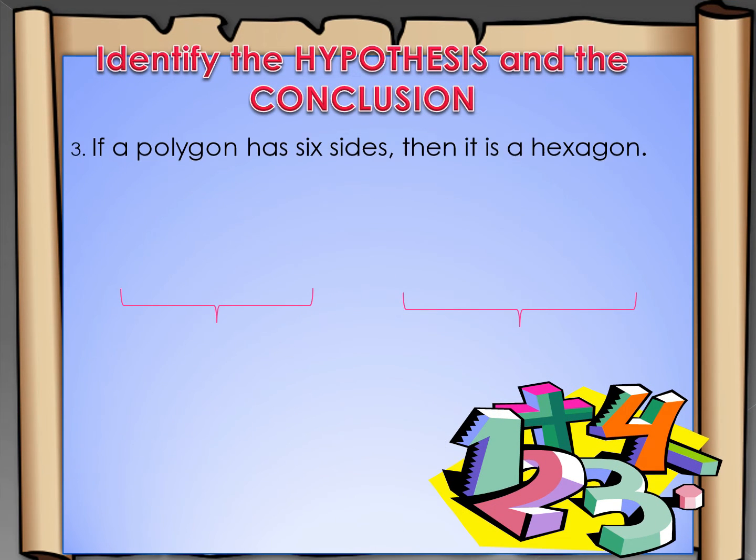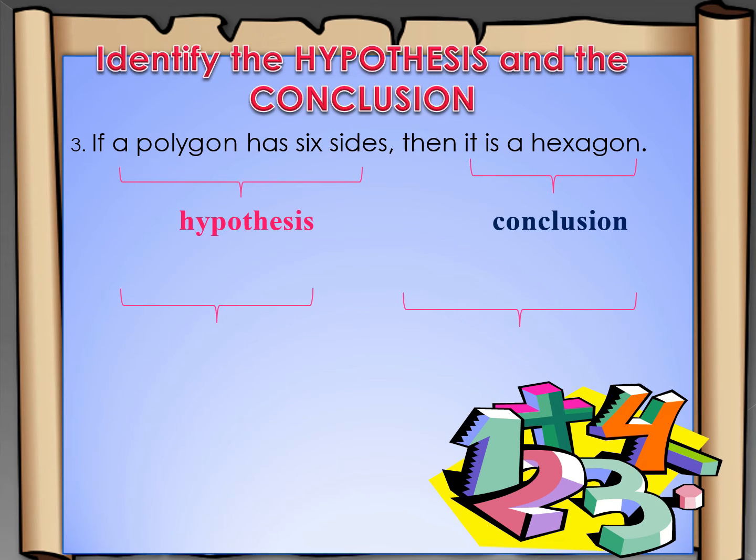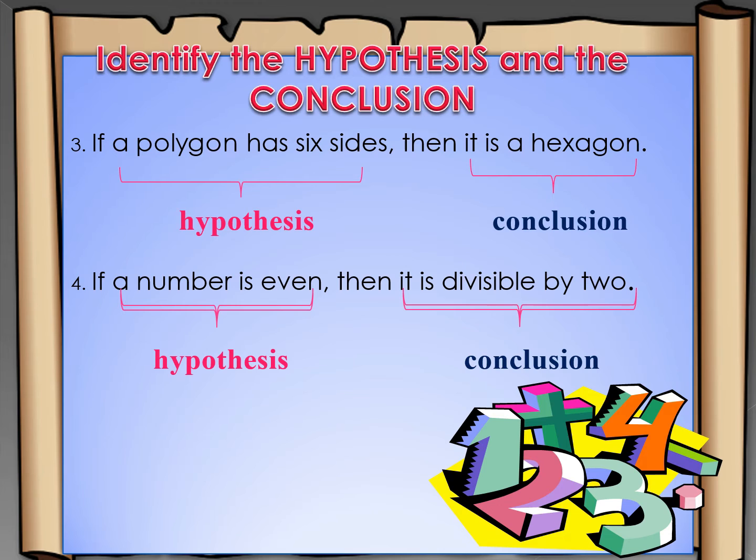Example number three: If a polygon has six sides, then it is a hexagon. What is the hypothesis? The hypothesis is: a polygon has six sides, and the conclusion is: it is a hexagon. Number four: If a number is even, then it is divisible by two. A number is even is our hypothesis, and it is divisible by two is our conclusion.